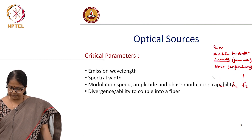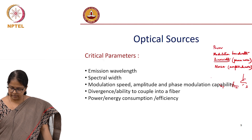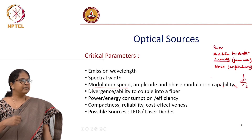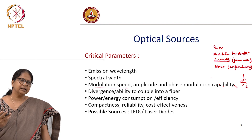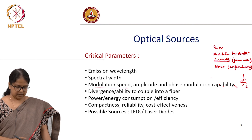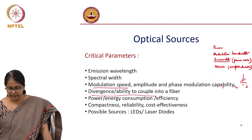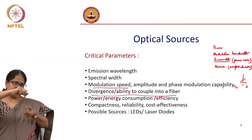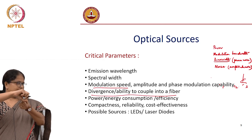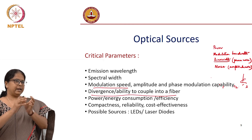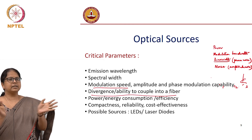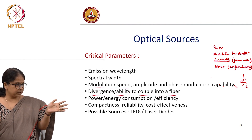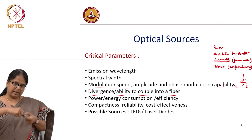We talked about modulation — it is not just the speed; it should have the ability to do amplitude modulation and phase modulation. The source's ability to couple into a fiber is also important. An LED is a source which is emitting light, but you should have the ability to put that light into the fiber. So the emission features — what is the angle of divergence from the source? Can I easily couple it into a fiber? That is an important parameter.